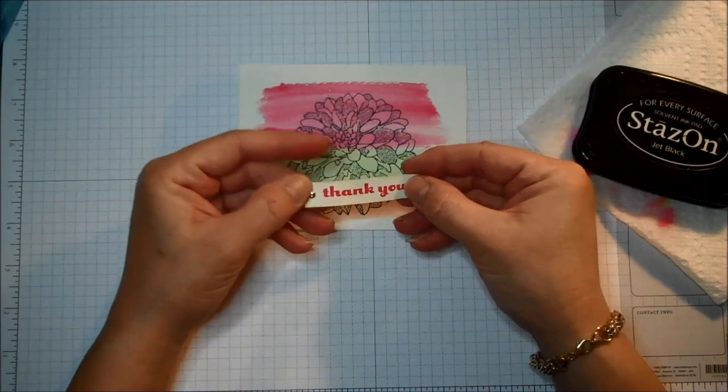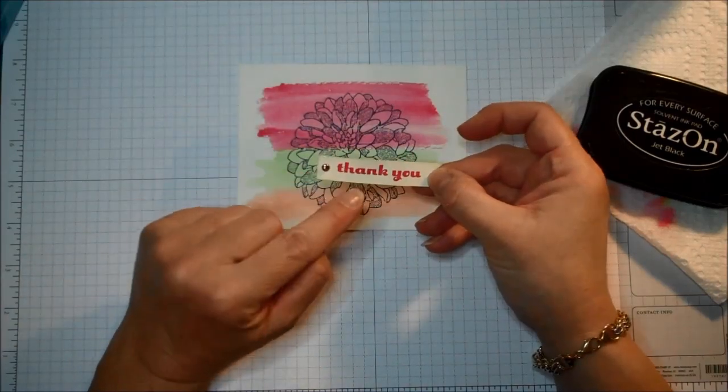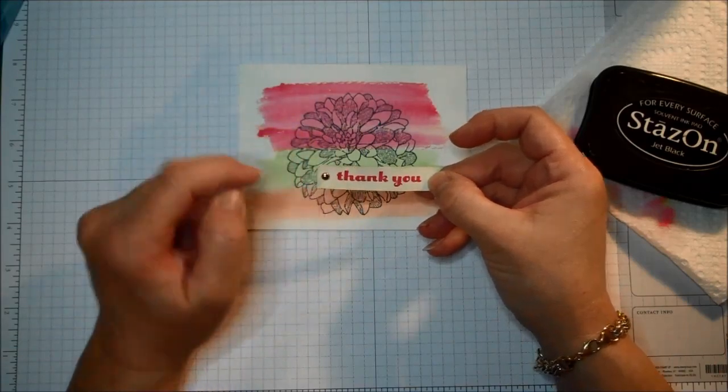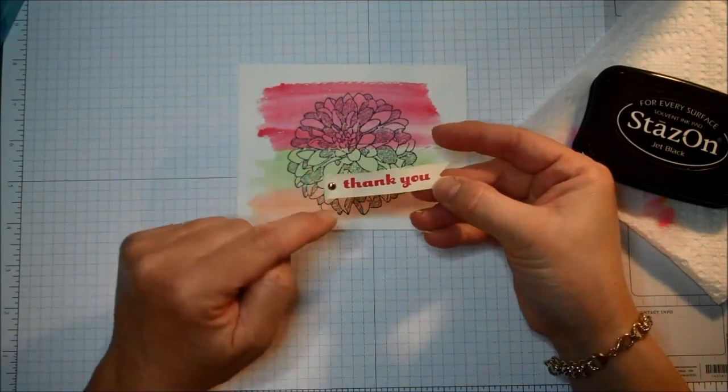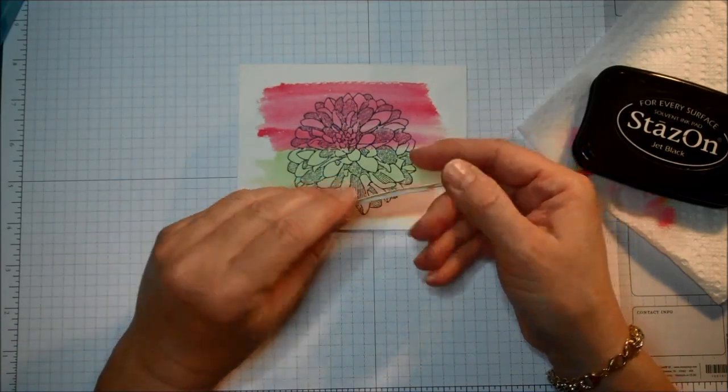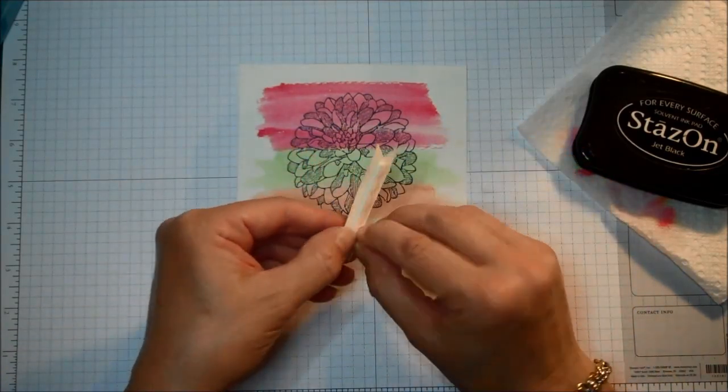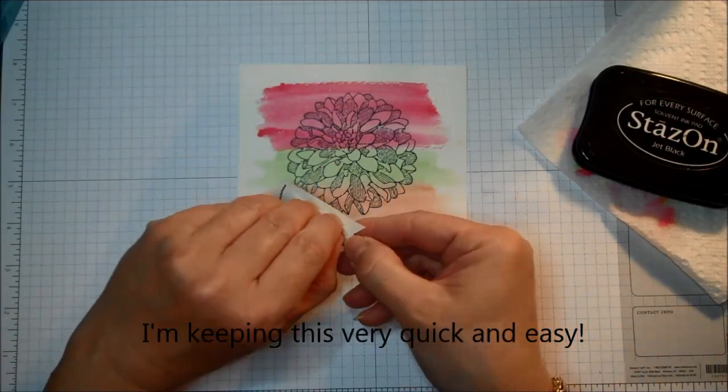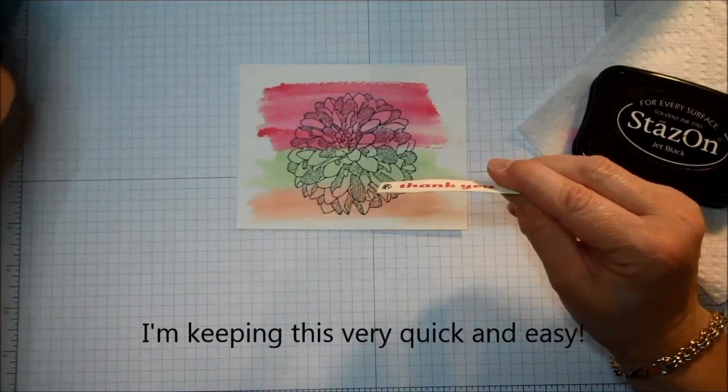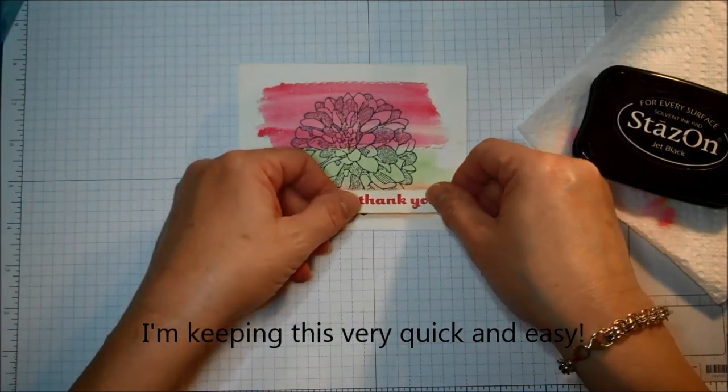I'm going to add a little sentiment. This is also from Regarding Dahlias. I stamped it in Strawberry Slush on Very Vanilla. I created a little pennant. I sponged a little bit with the Pistachio Pudding around the edge, and I gave it a little silver brad. I have Dimensionals on the back. Just a long strip of the side of the Dimensionals. I'm just going to add this to the bottom. Like this.